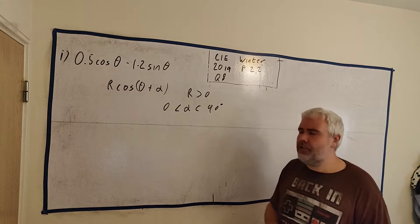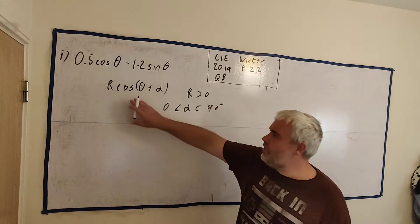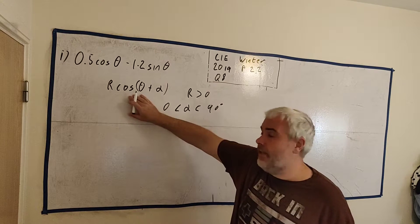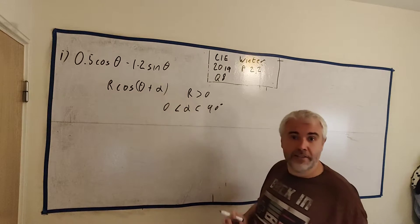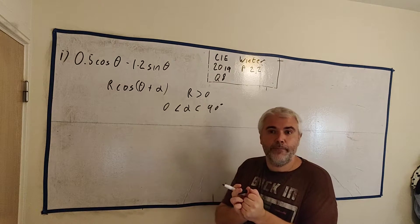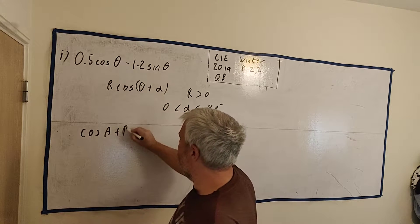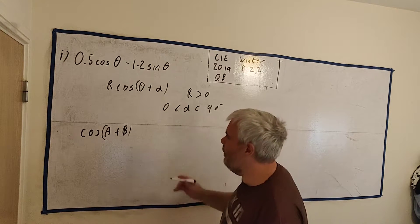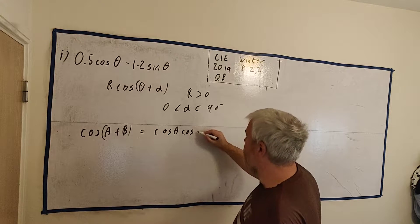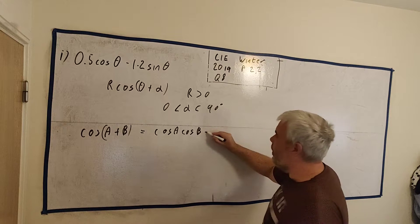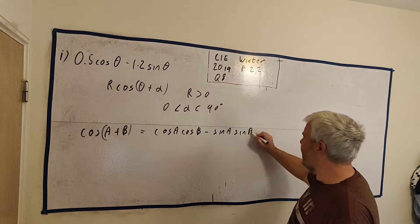This is a quite common question in exams — something that looks like that — and it's going to be very similar how to do it each time. What we need to do is work with this formula. There's a very famous formula for the cosine of two angles, how to break them apart. Cosine of any two angles is always going to be equal to cosine of the first angle times cosine of the other angle, minus sine of the first angle multiplied by sine of the second angle.